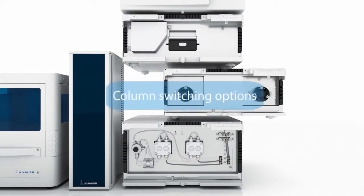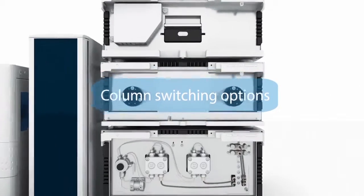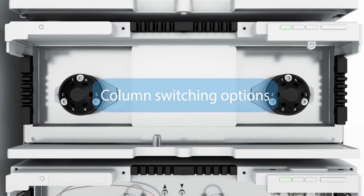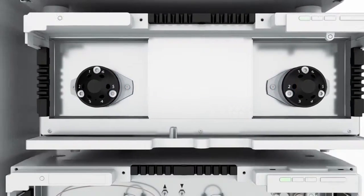Column switching assistants like the shown ASM 2.1L modules make method scouting easy. Up to 6 columns can be switched.